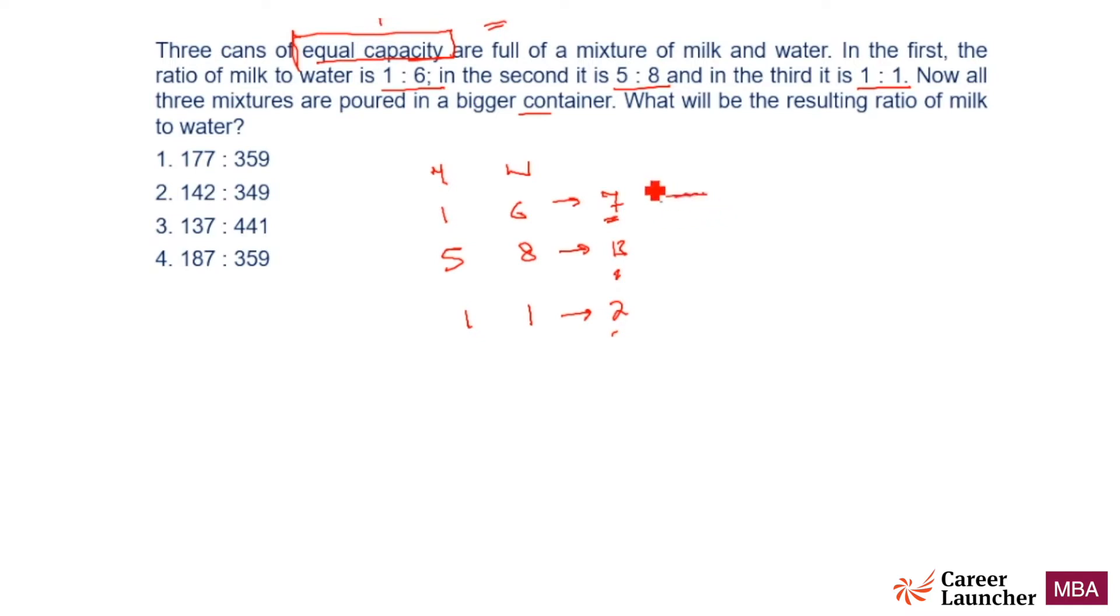So what is this going to mean? So 182, let me start from the third one. That means 91 liters of milk and 91 liters of water.